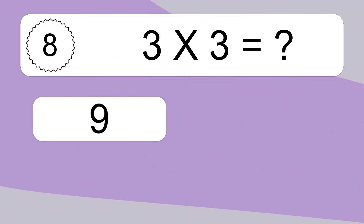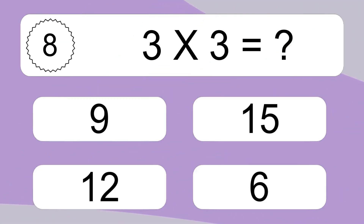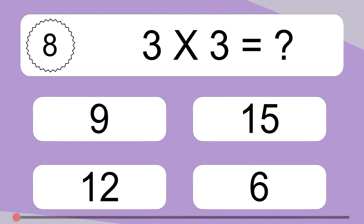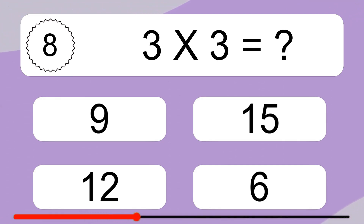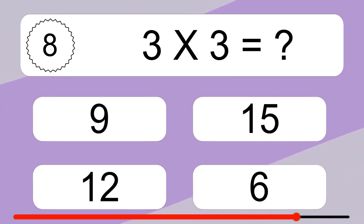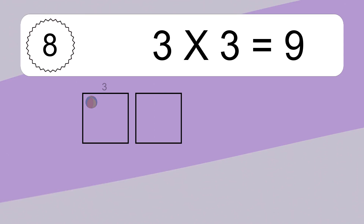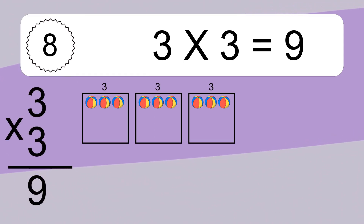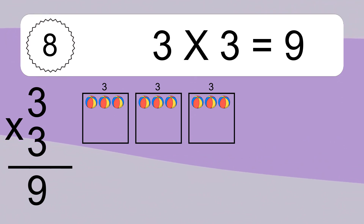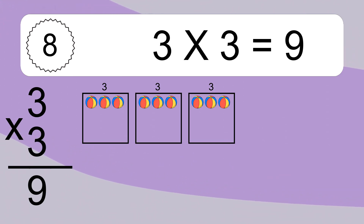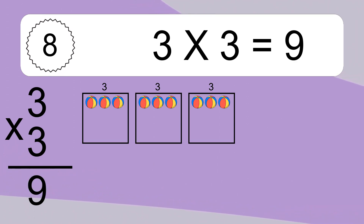3 times 3 equals what? 3 times 3 equals 9. We have 3 boxes, and each box has 3 colorful balls inside. If you count all the balls in all the boxes together, you will have 3 times 3 balls. This equals 9 balls.